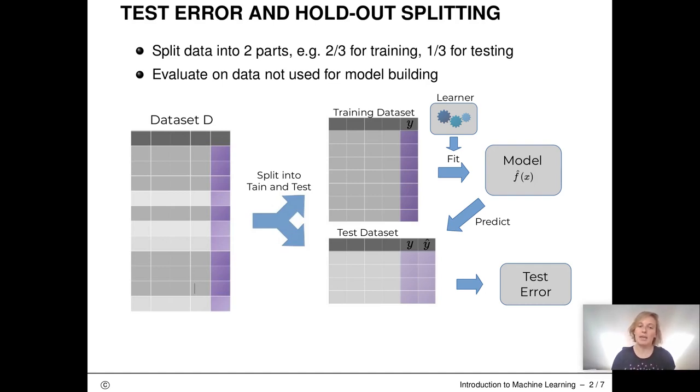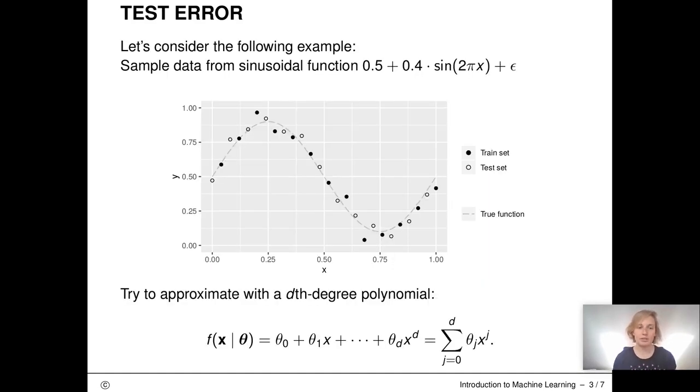Let's consider an example where we have a sinusoidal function plus some measurement error epsilon. From this function we draw data, a training set and a test set. The line here shows the sinusoidal function without the error. The dots are the data points from the two respective samples.